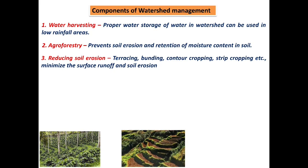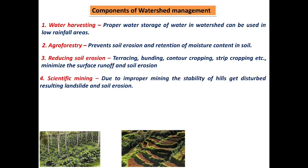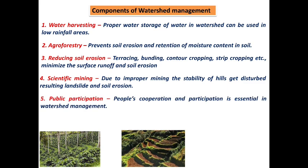The third component is reducing soil erosion: terracing, bunding, contour cropping, and strip cropping are used to minimize soil erosion and runoff on the slopes of the watershed, retaining nutrient-rich content at each stage. The fourth component is scientific mining: due to improper mining the stability of hills gets disturbed, resulting in landslides and soil erosion. To avoid this, soil-binding plants should be planted with contour trenching at intervals of one meter, and overburden should be dumped in the mined area to minimize destructive effects.